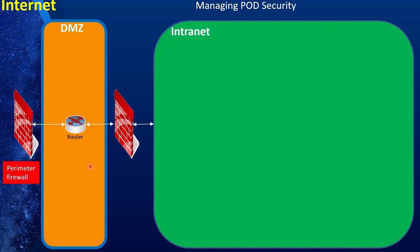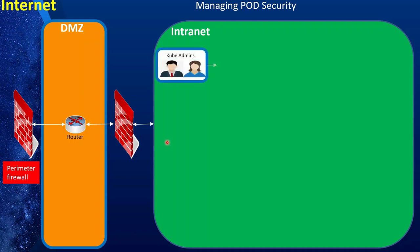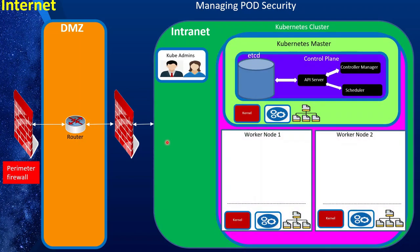If you are hosting in the cloud environment, the cloud provider will secure that environment for you. However, if you're hosting in your own environment, you want to make sure that access is restricted to the Kubernetes cluster. A Kubernetes admin will set up and create a Kubernetes cluster, which consists of a Kubernetes master hosting the control plane and one or more worker nodes. In the previous episode, we talked about how Kubernetes admins can use RBAC or role-based access control to secure the control plane itself, because if the control plane is compromised, the whole system is compromised.